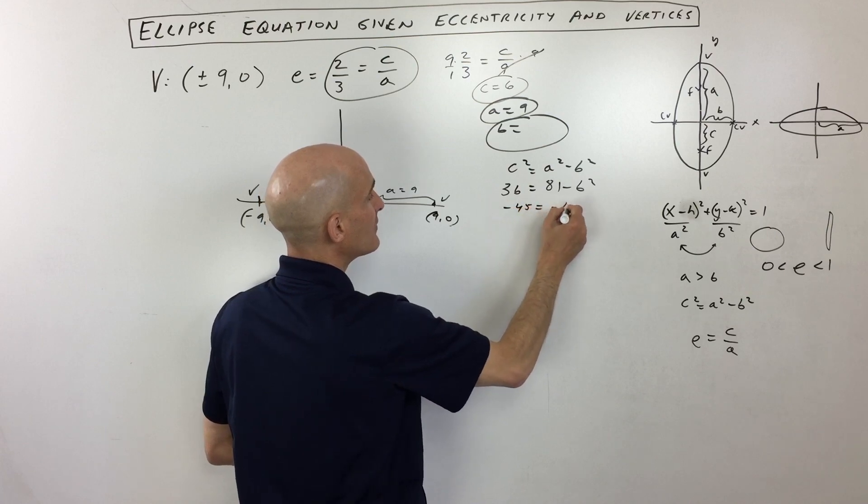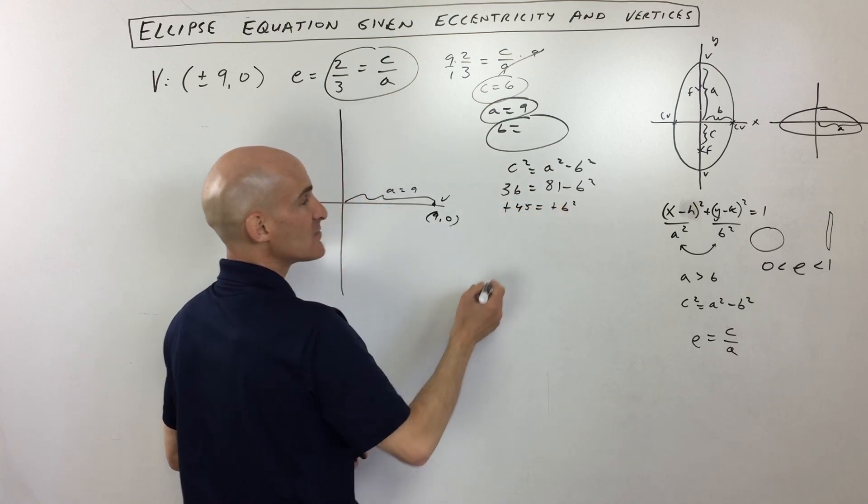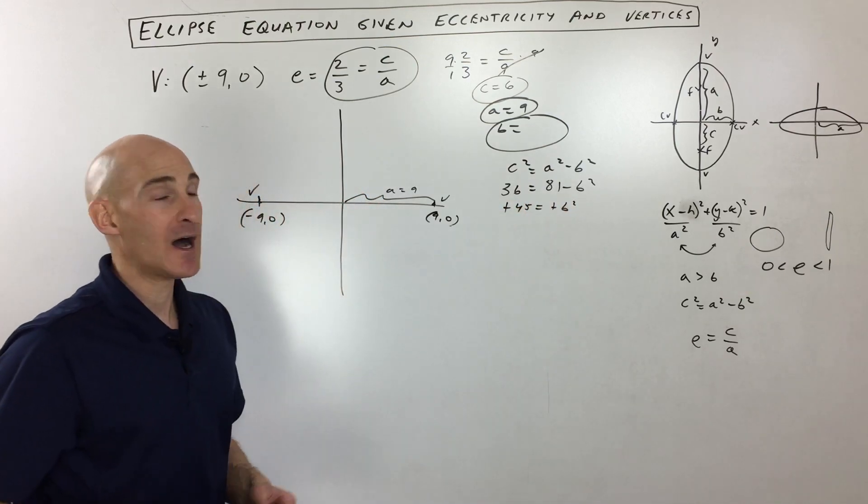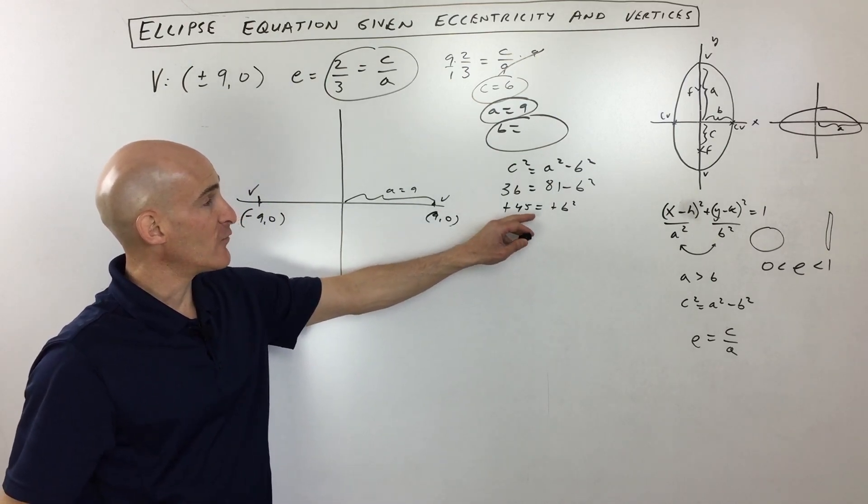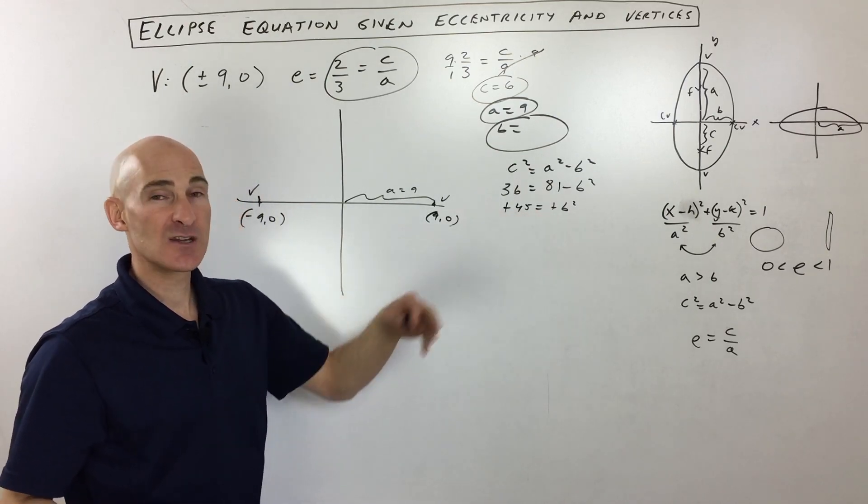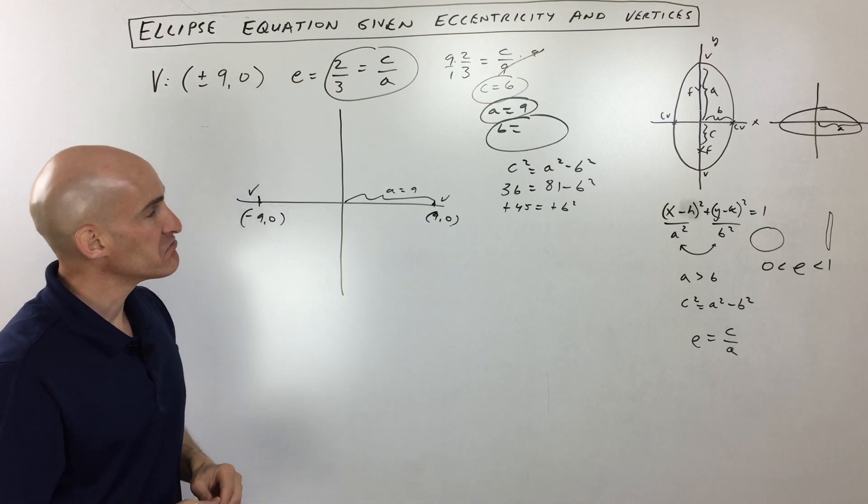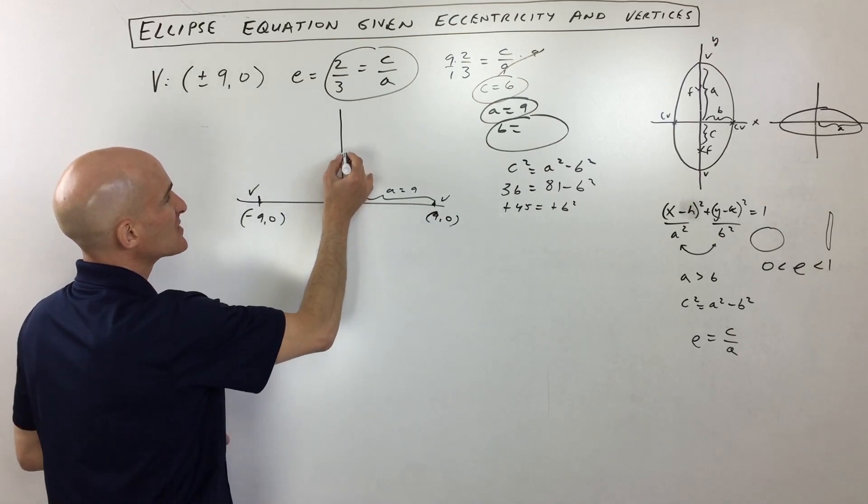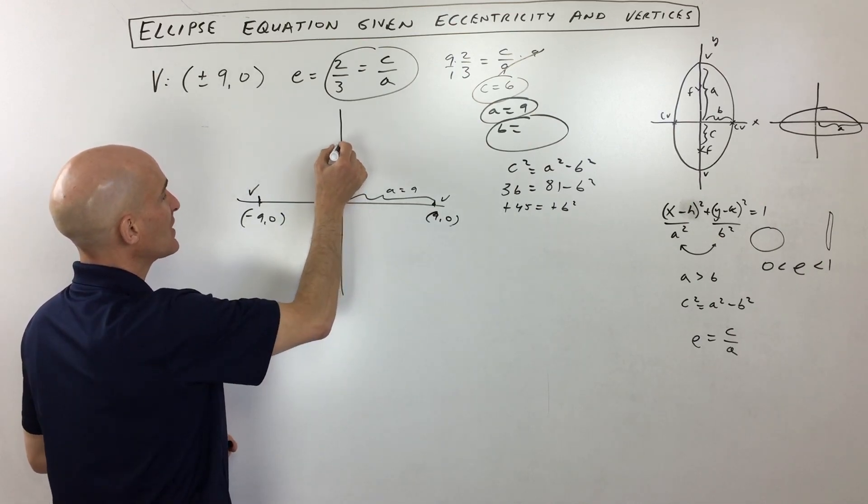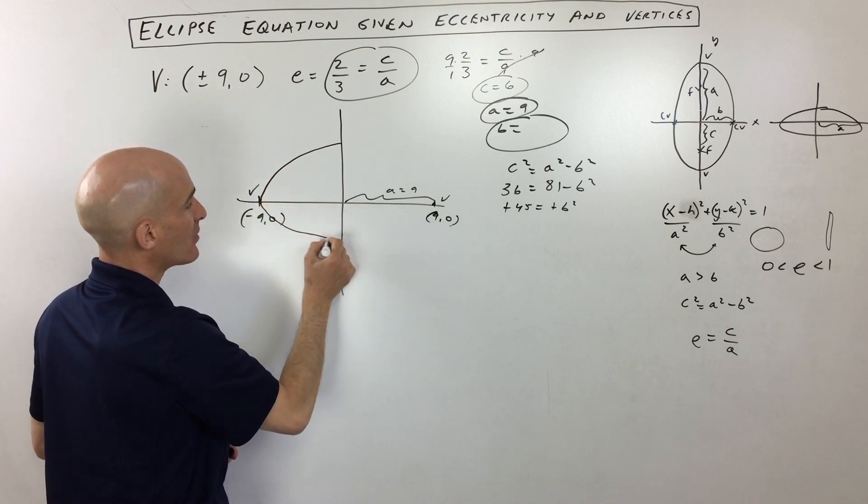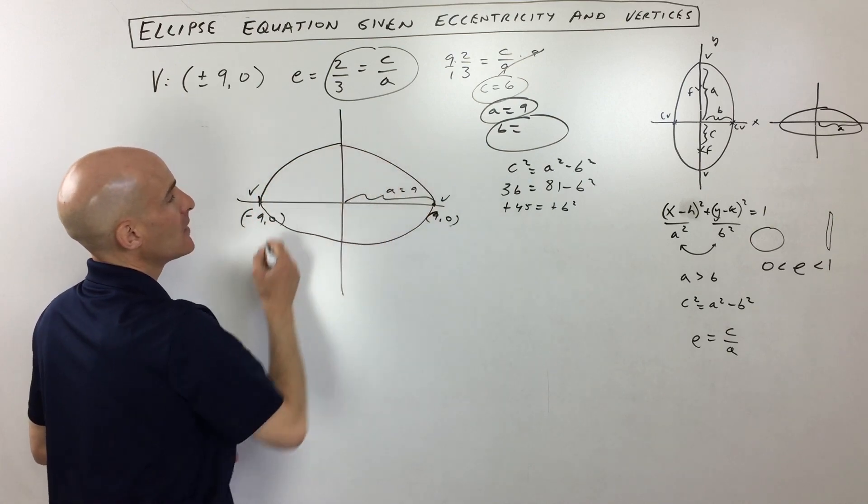Multiply both sides by negative one, and you can see that b squared is 45. If we take the square root, that's going to be around less than seven. So it's going to be somewhere around here and around here, so we can kind of get an idea about the shape of our ellipse, something like this.